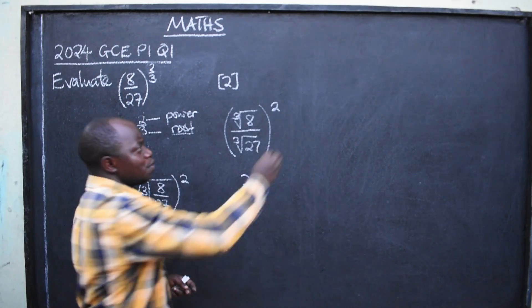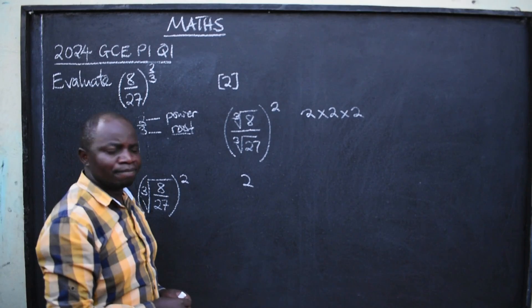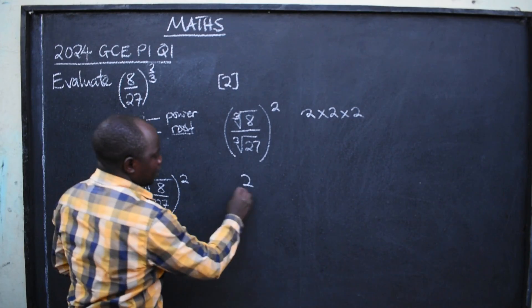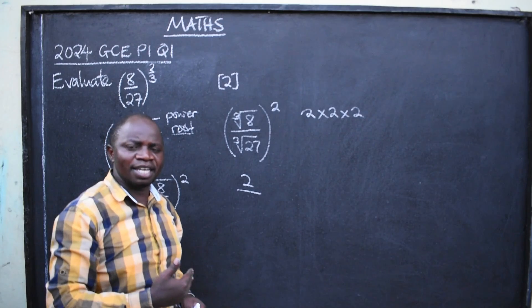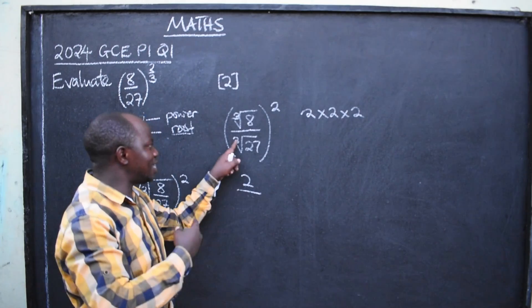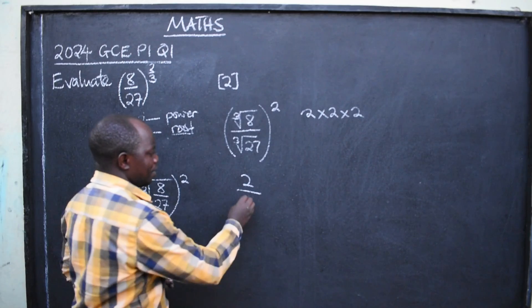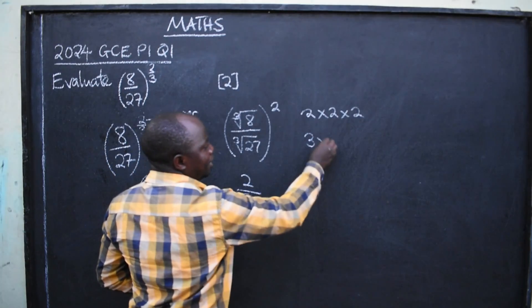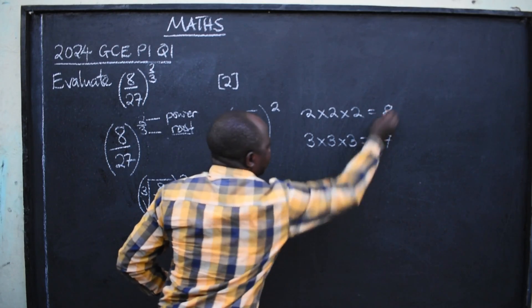Correct? Yes. 2 times 2 times 2 is 8. What about the cube root of 27? Number you can multiply itself three times and it should give you 27. 3. This will give you 27. This will give you 8.